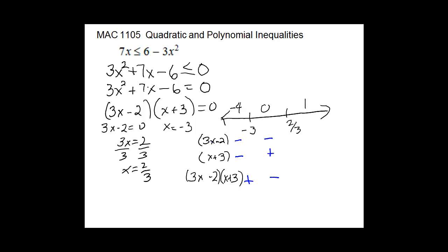Testing 1: 3 minus 2 is positive; 1 plus 3 is positive; positive times positive is positive. Look back at our inequality in proper form — we want our function to be less than or equal to 0, meaning negative on the bottom line. So the middle section is the one we want. This time there is an equals sign underneath the inequality symbol, so we use brackets. Our solution in interval notation is negative 3 to 2 thirds with brackets.